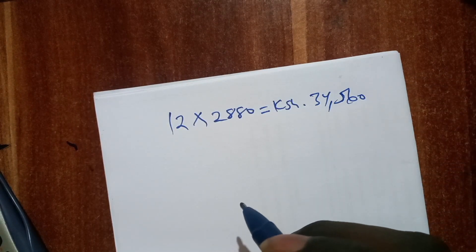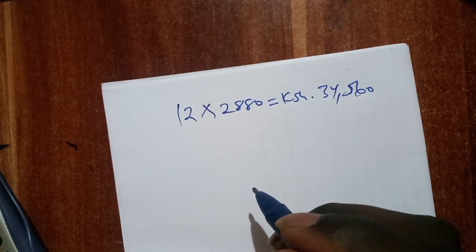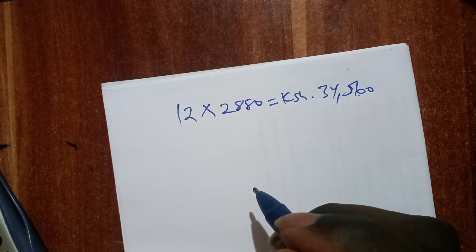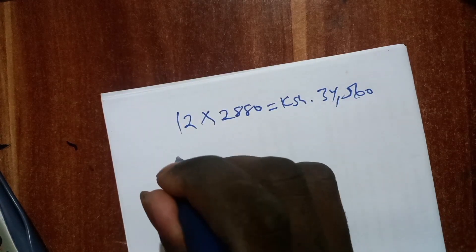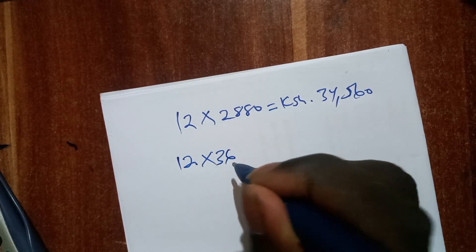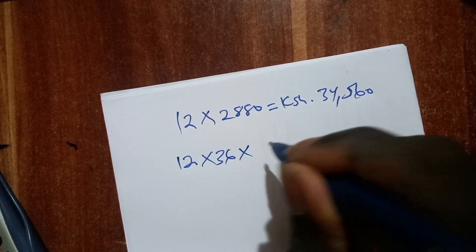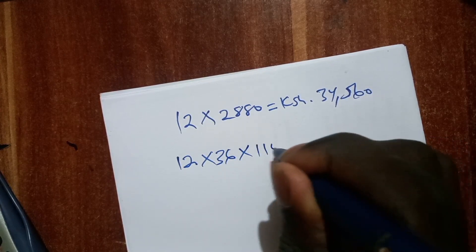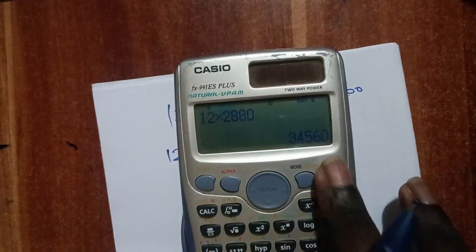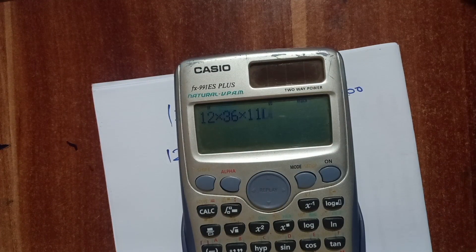The next thing is, let's know how much he got when he sold the tins. So it's 12 boxes, each having 36 tins, and each tin is sold at 110 shillings. So it's 12 multiplied by 36 multiplied by 110, which equals 47,520.